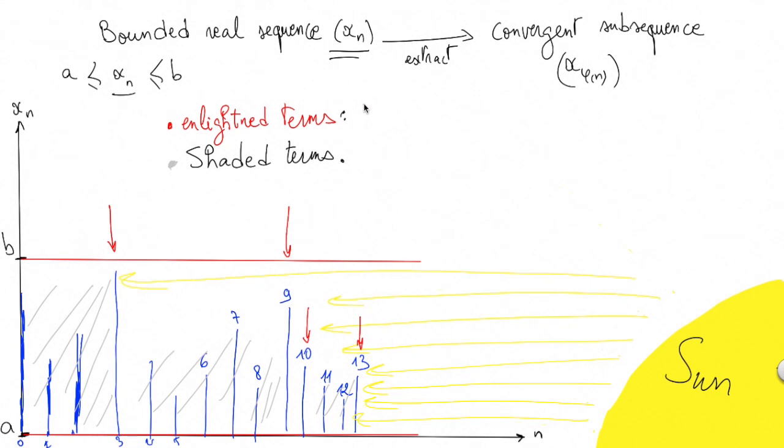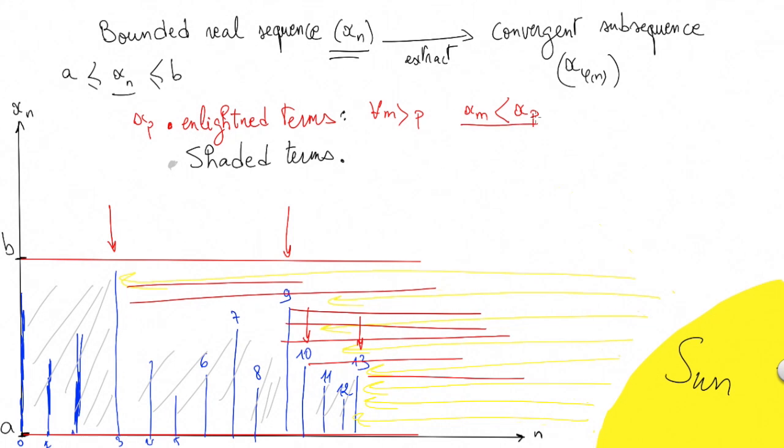The formal definition of enlightened terms or illuminated terms would be: if xp is an enlightened term, it means that for every term coming after p, xn is not hiding xp. Everything coming after x3 is supposed to be lower than x3, everything coming after x9 is supposed to be lower than x9, etc. Thus, this definition.